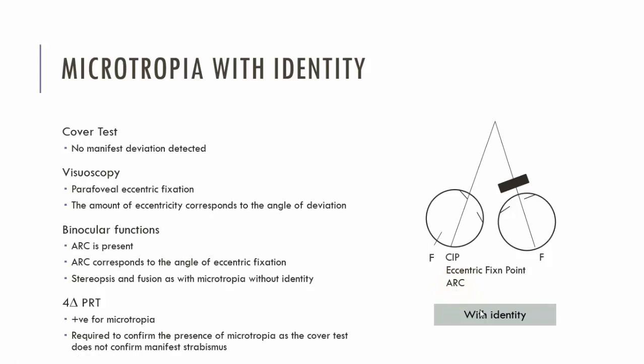One more important point regarding microtropia with identity: a patient who has monofixation — in other words who is straight but has central suppression due to anisometropia — will also fail the four prism diopter test. So performing the four prism diopter test on a patient who gives no movement on cover test does not guarantee a microtropia; it indicates either a microtropia or monofixation. It is therefore necessary to then look at visuoscopy and confirm eccentric fixation. When you have a positive four prism diopter test with eccentric fixation, you have absolute confirmation that the absence of movement on cover test was because the patient was not centrally fixing.